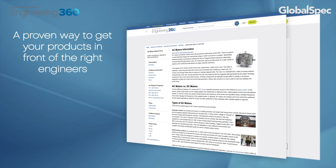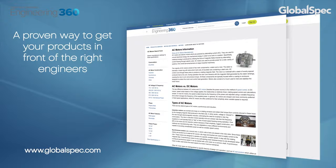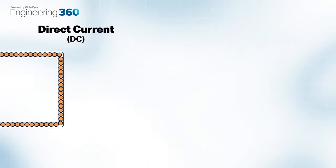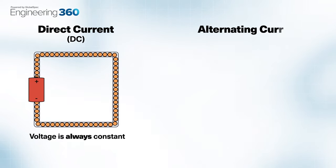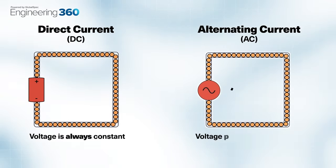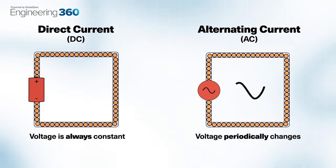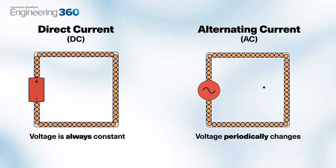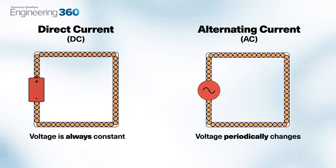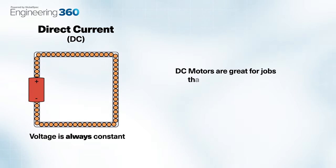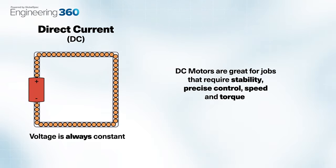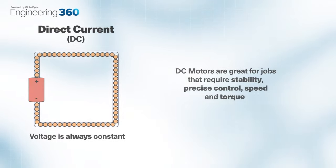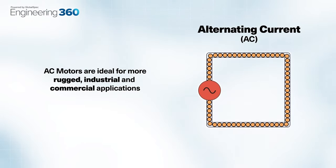Fundamentally, in direct current the voltage is always constant and the electricity flows in a certain direction. In contrast, in alternating current the voltage periodically changes from positive to negative and negative to positive in a sine wave. It's this constant flow of energy in the DC supply that makes DC motors perfect candidates for jobs that require stability and precise control of speed and torque, while AC motors are ideal for more rugged industrial and commercial applications.